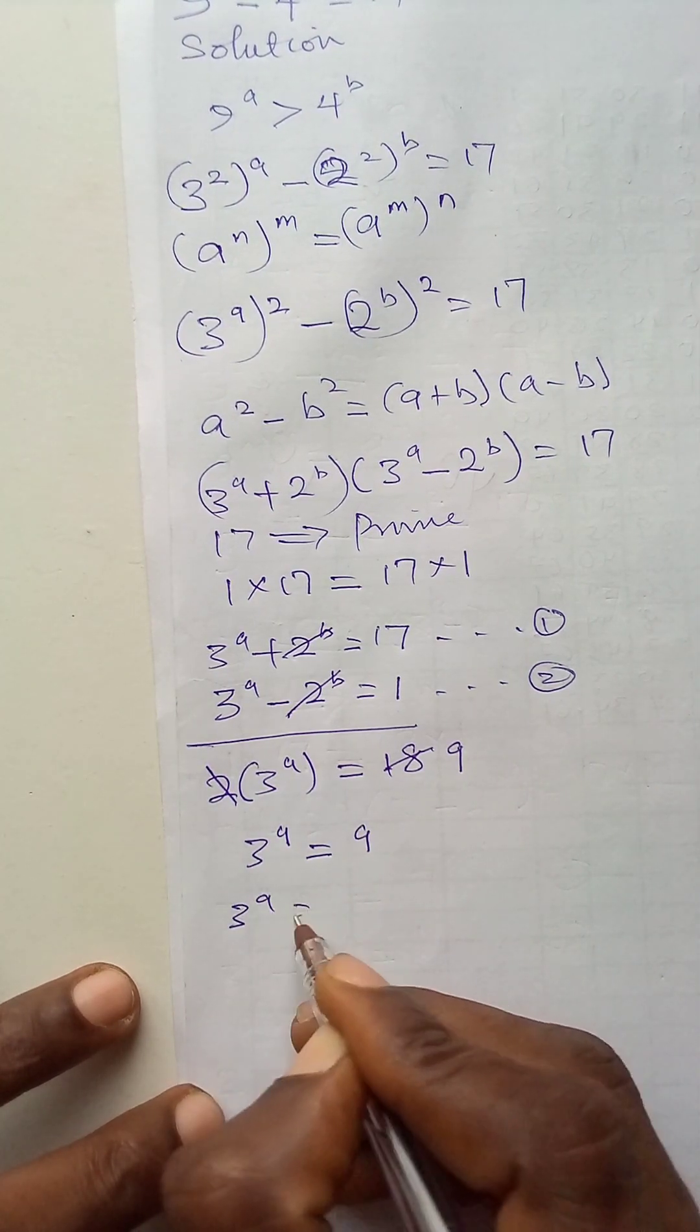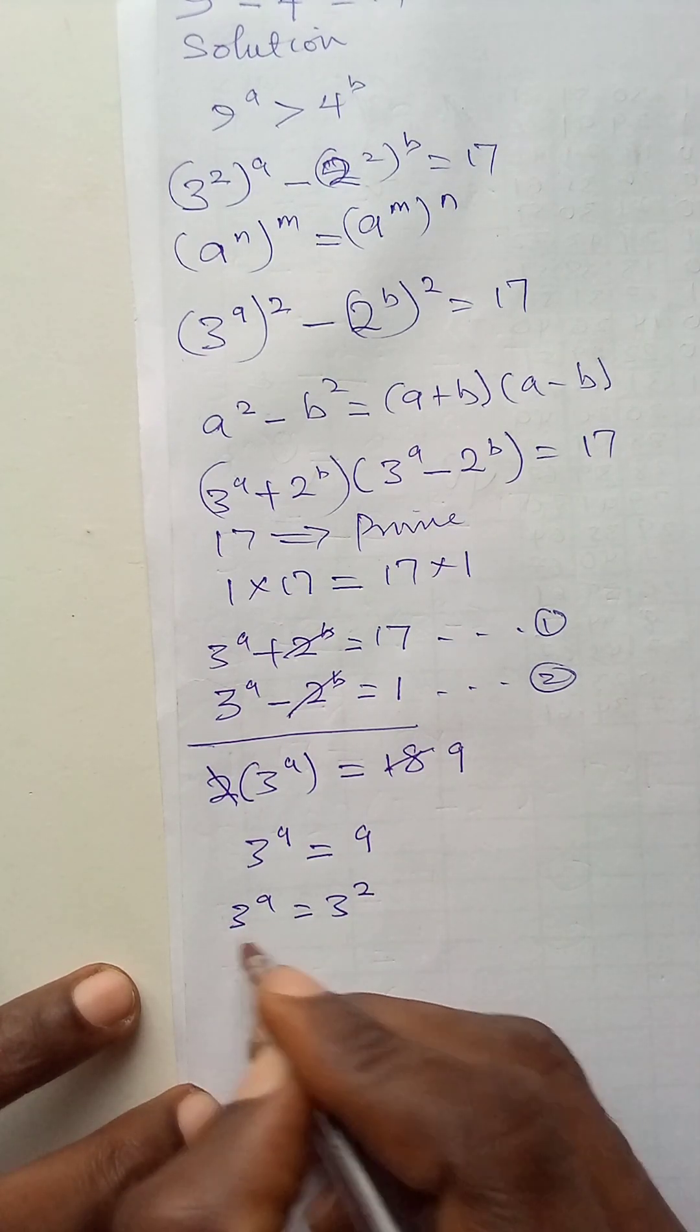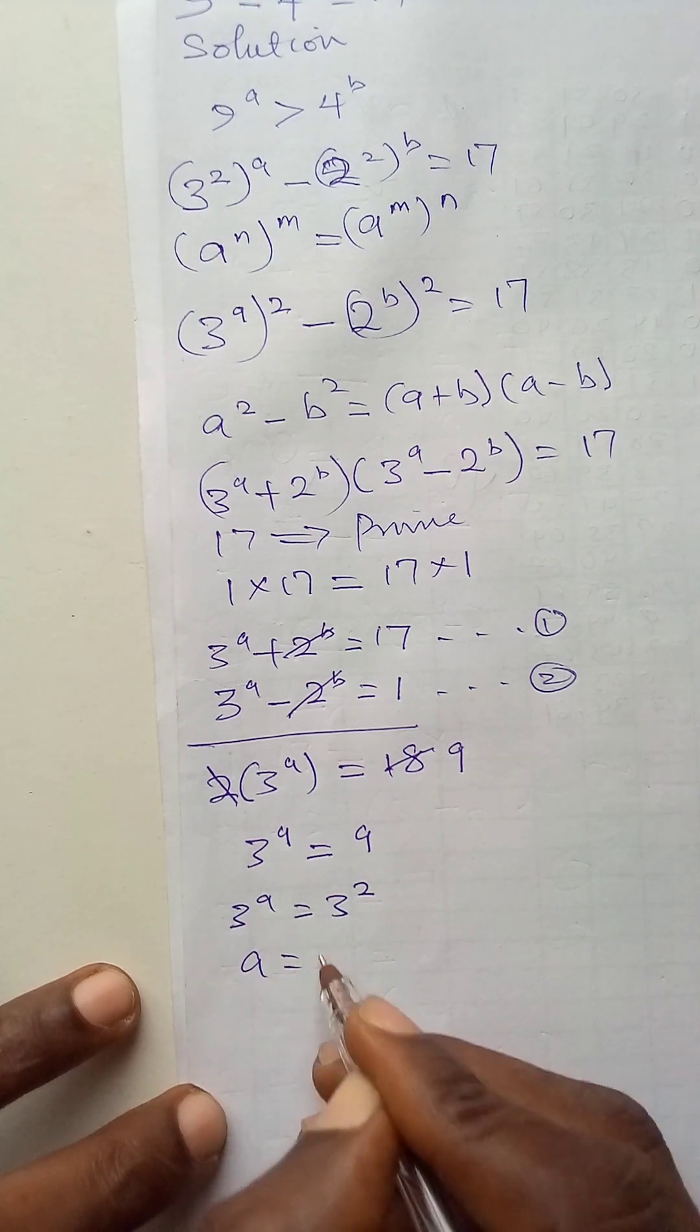That means that 3 to power a is 3 to power 2 because 9 is 3 to power 2. Since the bases are the same, I will take the powers. a is equal to 2.